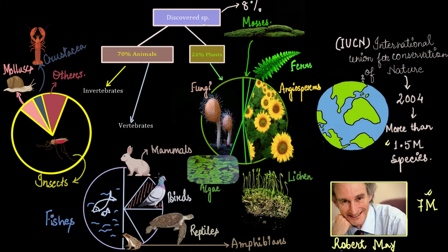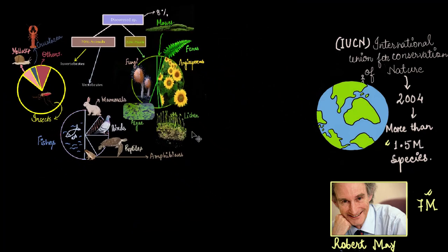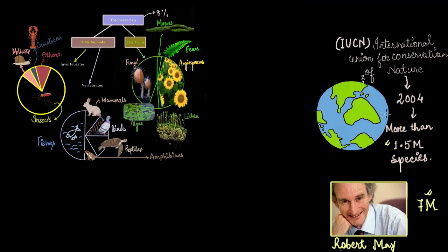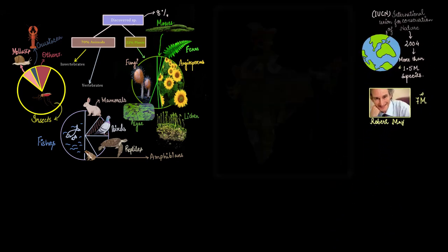The rest 8% of the discovered species are the ones which are not mentioned in this pie chart. So this was about the species diversity found in the entire world. Now it's time we focus our discussion to a small piece of land in this entire world, which is India.